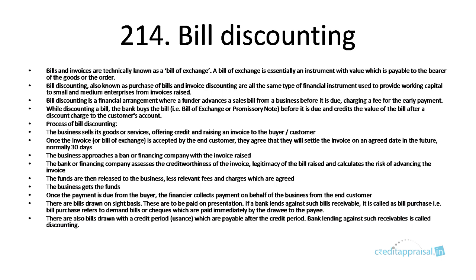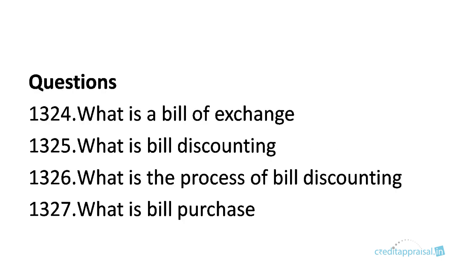Bills drawn on a sight basis are paid on presentation; a bank's claim against such bills receivable is called bill purchase. Bill purchase refers to demand bills or checks paid immediately by the drawer to the payee. There are also bills with a credit period — called usance bills — which are payable after the credit period; bank lending against such receivables is called discounting. That is the fundamental difference between bill purchase and bill discounting, which is an important interview question. Key questions for this chapter: what is a bill of exchange, what is bill discounting, what is the process of bill discounting, and what is bill purchase.